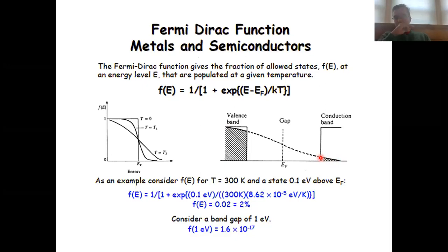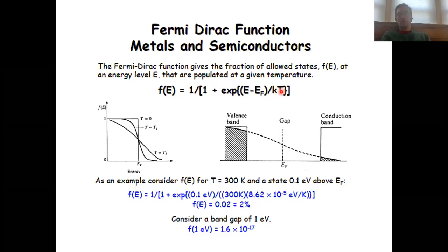We can also quantitatively calculate this by inserting particular energies into the Fermi-Dirac function. For instance, at a temperature of 300 Kelvin and 0.1 electron volts above the Fermi level, inserting those values gives you a fraction of states above the Fermi level which are occupied of 2 percent.